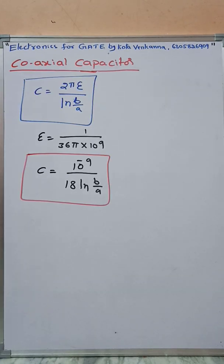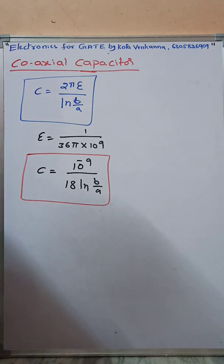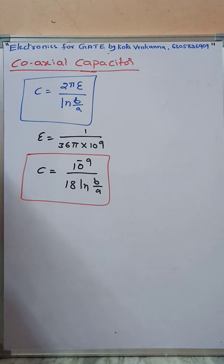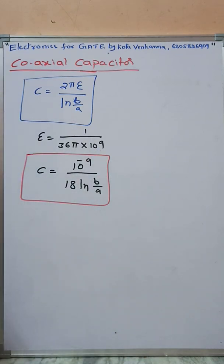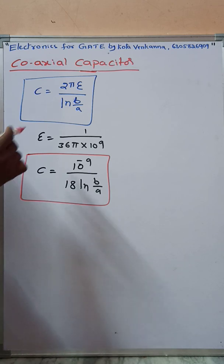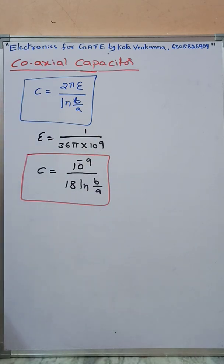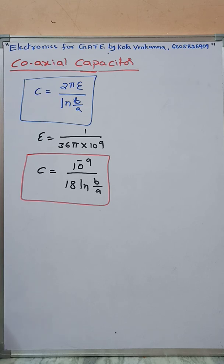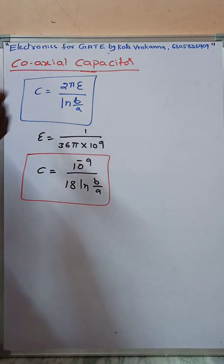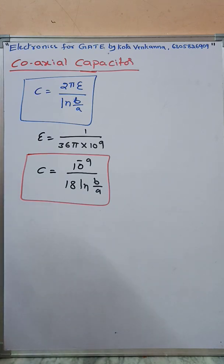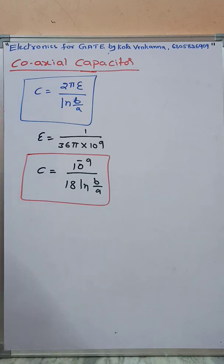The capacitance of the coaxial capacitor is C = 2*pi*epsilon / log(b/a), where 'a' is the radius of the inner conductor, 'b' is the radius of the outer conductor, and epsilon = 1/(36*pi * 10^9). Substituting epsilon, the coaxial capacitor equation becomes C = 10^(-9) / (18 * log(b/a)).